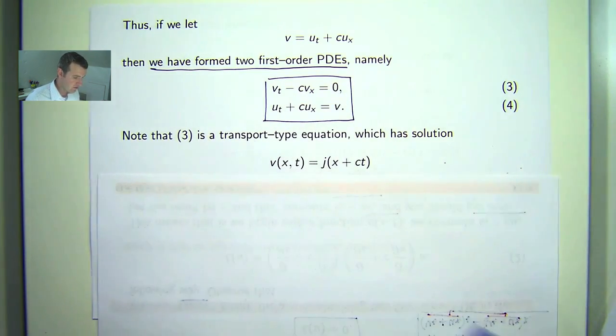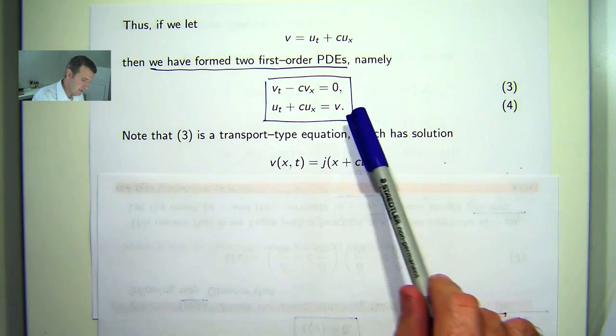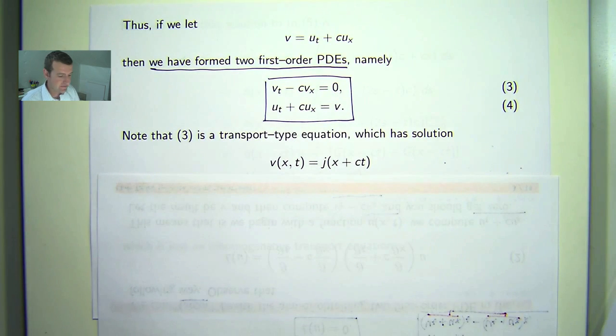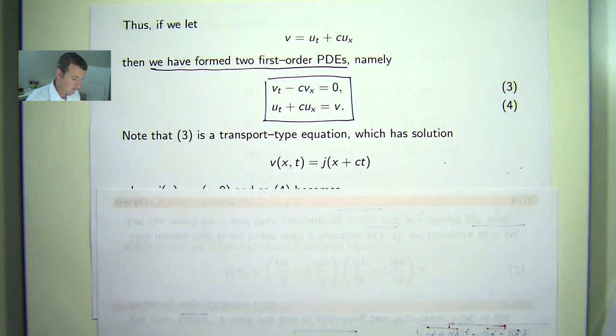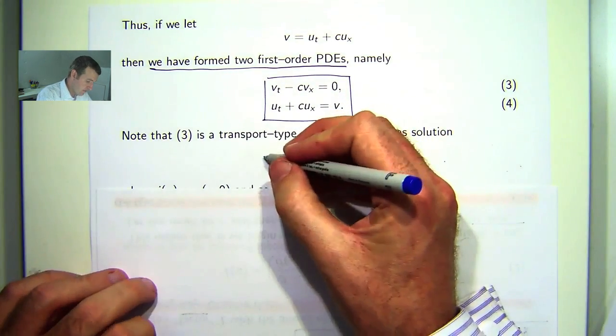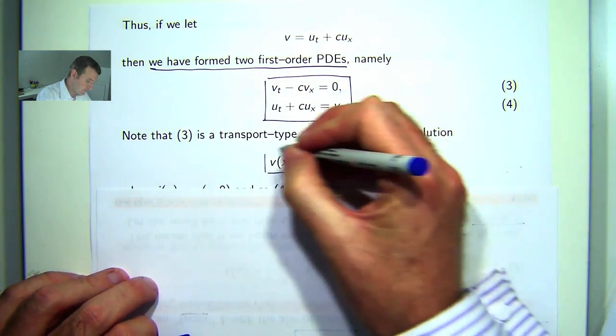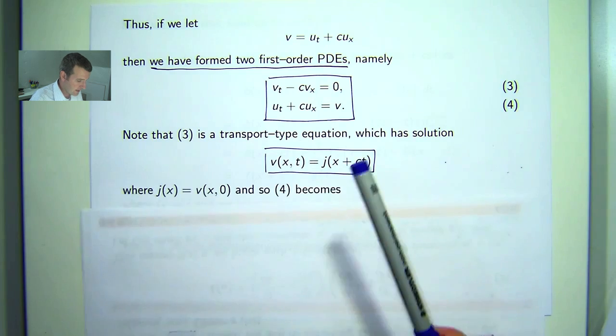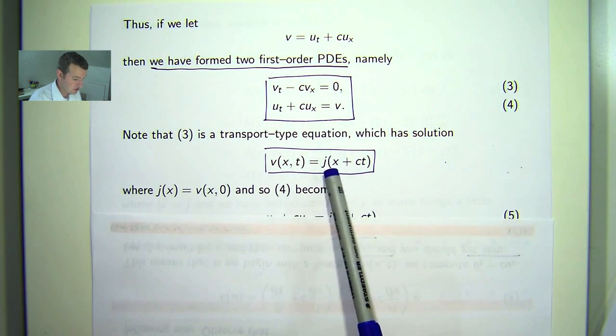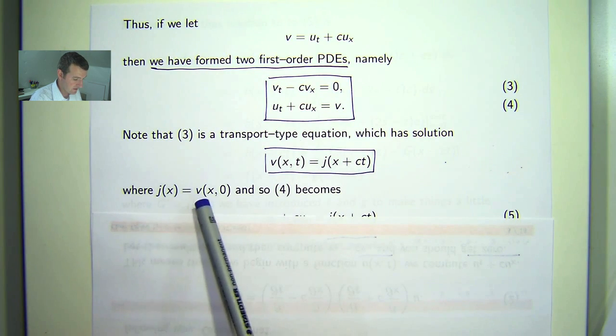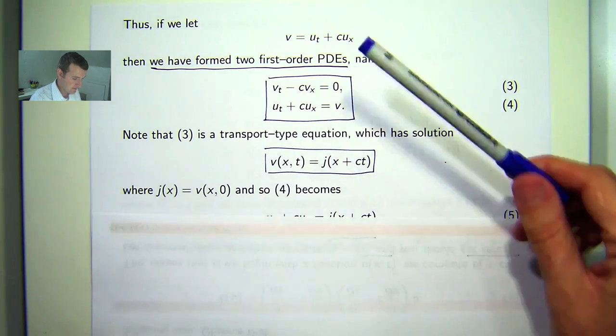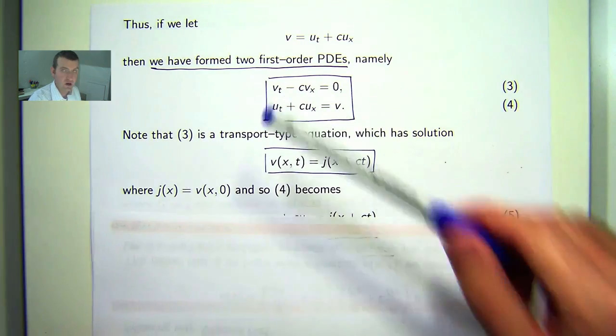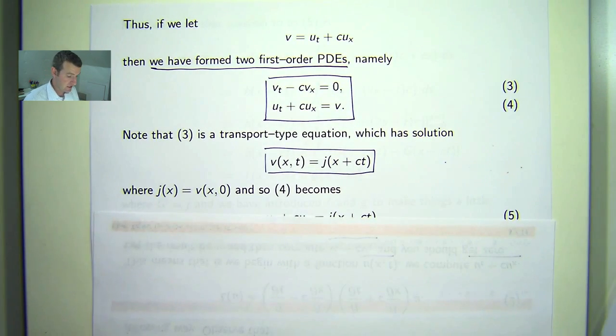So let's solve three first. Three is a first order homogeneous linear PDE. Four is a first order inhomogeneous PDE. So you can solve three by a number of different ways. It's a transport equation, so you can solve it using those methods or you can use the method of characteristics. For an arbitrary differentiable function j, such that j(x) equals v(x,0), this is the solution to three. Take that, put it in here and solve that inhomogeneous problem.